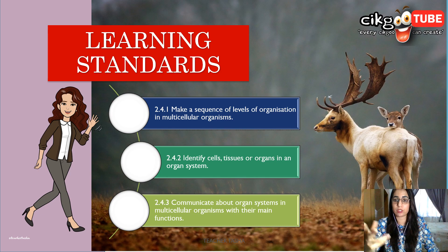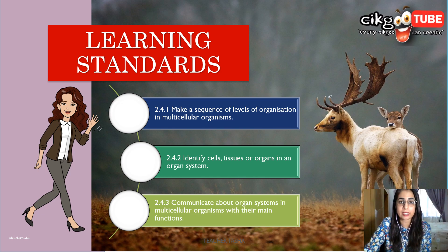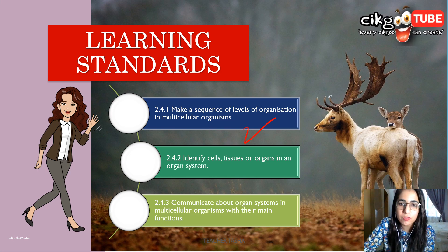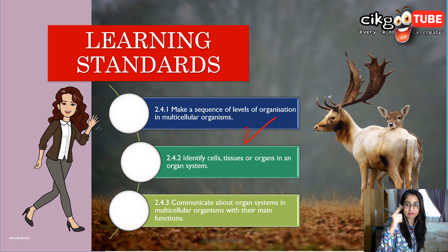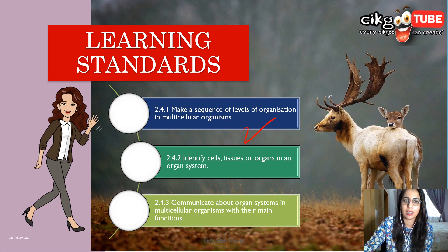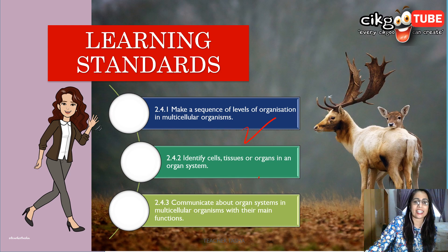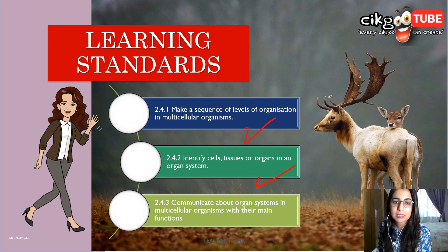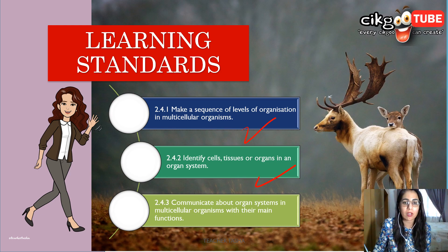As usual, we have to go through the learning standards. The first one is to make a sequence of the levels of organization in multicellular organisms — you have learned this in Form 1. Then, identify cells, tissues, or organs in an organ system, and communicate about organ systems in multicellular organisms with their main functions.